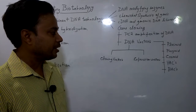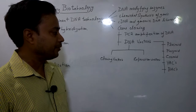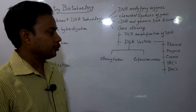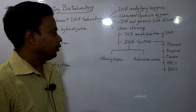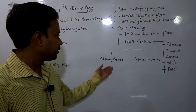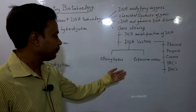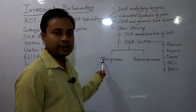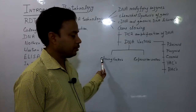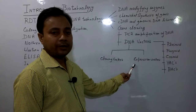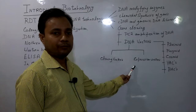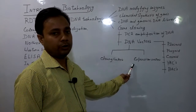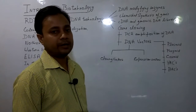YAC stands for yeast artificial chromosomes, and BAC stands for bacterial artificial chromosomes. Both of these vector molecules are used for the cloning of large DNA molecules. On the basis of their behavior, these vectors can be subdivided into cloning vectors and expression vectors. Cloning vectors are used to clone DNA molecules for the purpose of sequencing and screening of positive molecules. Expression vectors are specialized vectors which have special DNA elements responsible for the expression of gene molecules in specific organisms like plants and animals.